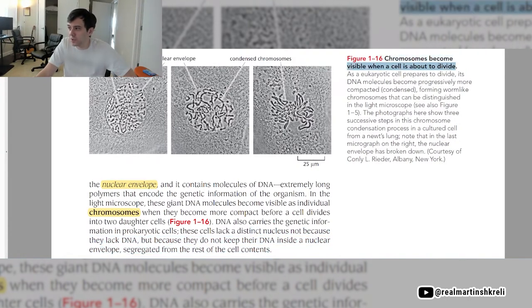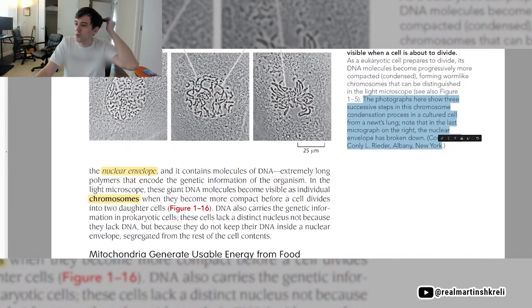Figure 1.16, chromosomes become visible when a cell is about to divide. As the eukaryotic cell prepares to divide, its DNA molecules become progressively more compacted or condensed, forming worm-like chromosomes that can be distinguished in the light microscope. The photographs shown here show three successive steps in the chromosome condensation process in a cultured cell from a newt's lung. Note that in the last micrograph on the right, the nuclear envelope has broken down.